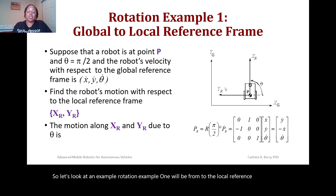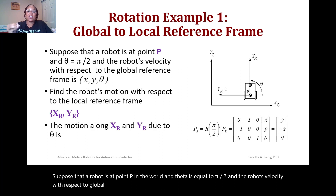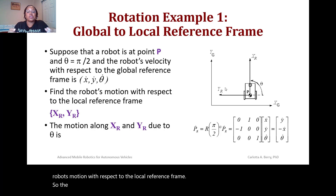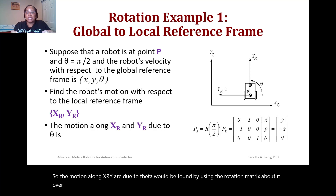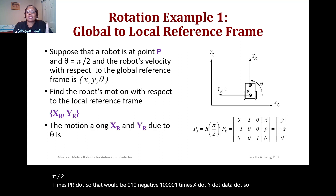Suppose a robot is at point P in the world and theta equals pi over 2, and the robot's velocity with respect to the global reference frame is [x_dot, y_dot, theta_dot]. To find the robot's motion with respect to the local reference frame, we use the rotation matrix about pi over 2 times PR_dot, which gives [0, 1, 0; -1, 0, 0; 0, 0, 1] times [x_dot, y_dot, theta_dot], yielding [y_dot, -x_dot, theta_dot]. Looking at the diagram, once the robot rotates, it is now moving upward along that axis, so the x-axis velocity becomes y_dot and the y velocity becomes -x_dot.